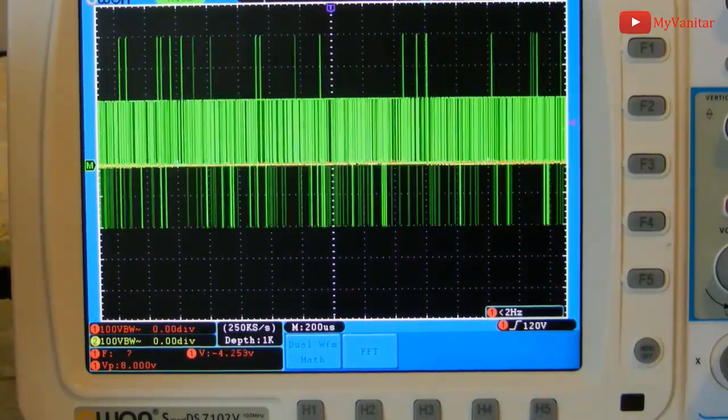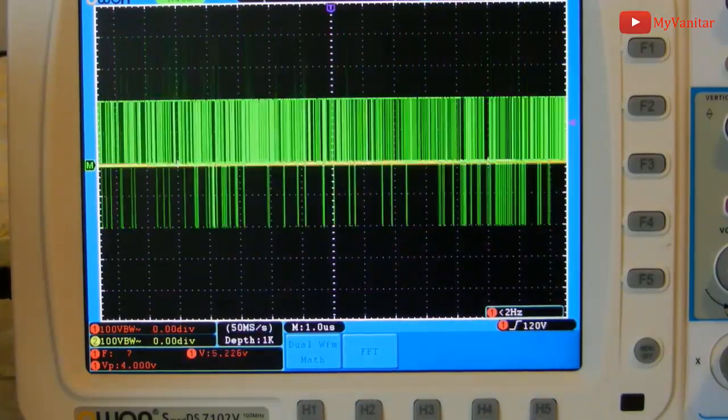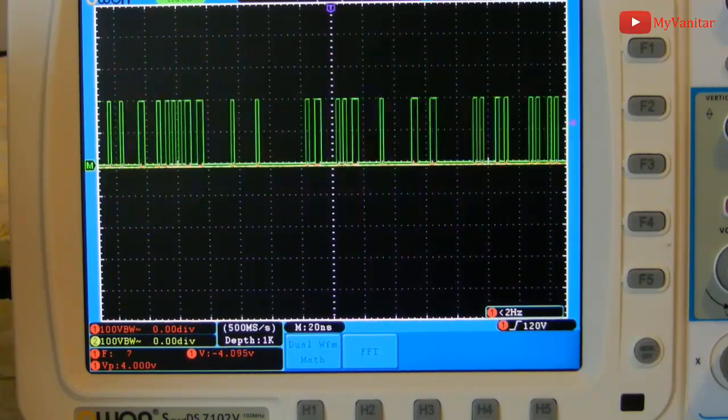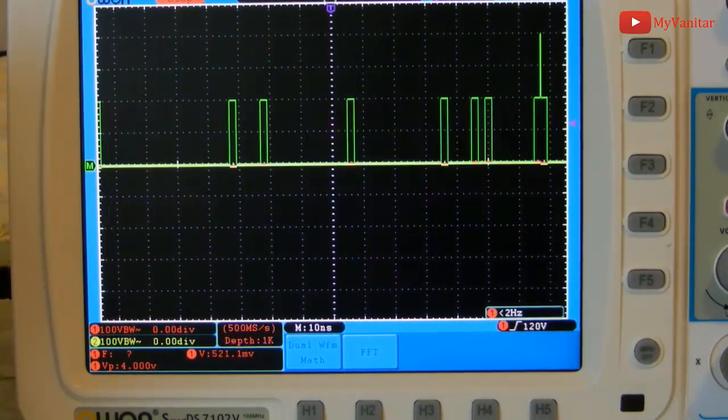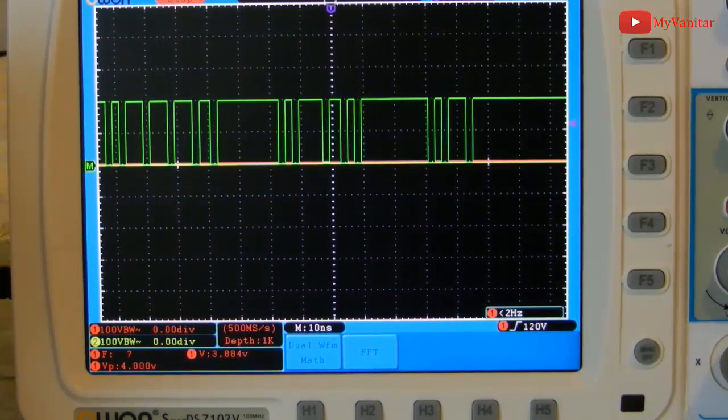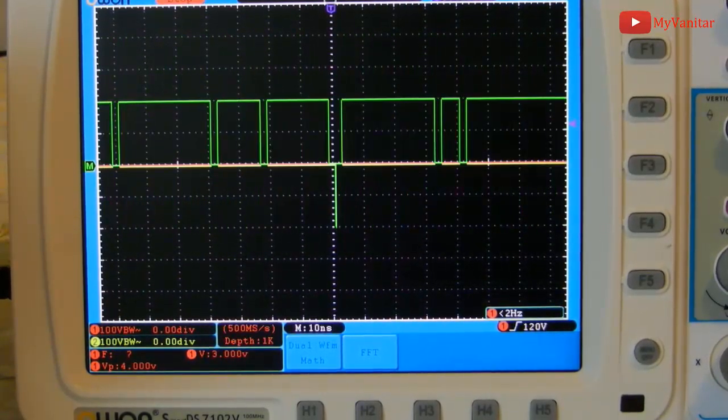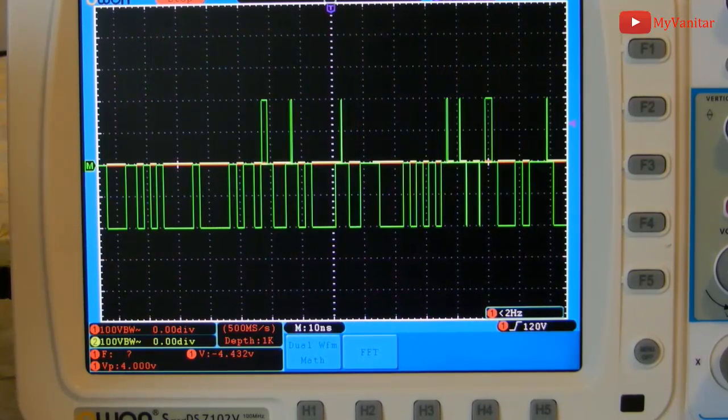Unfortunately this oscilloscope doesn't have a trigger on the math, so I'm going to change the time base and find the best view by using a run/stop button. So now I'll play with the oscilloscope's run/stop button to find the best example.